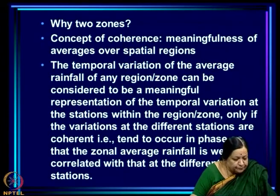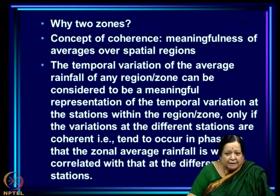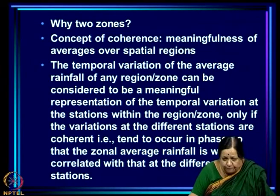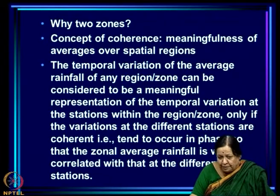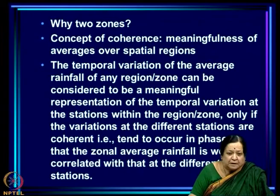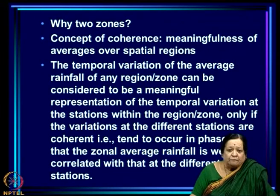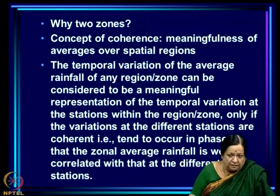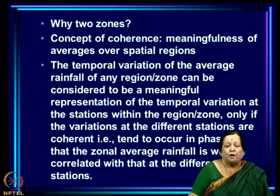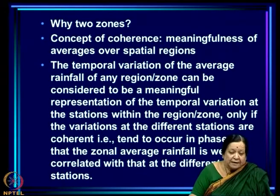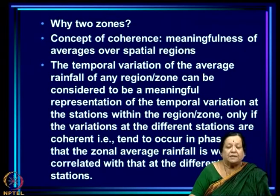To give a simple example: if half the fluid is boiling and the other half is resting over ice and we take the average temperature, that average of 50 degrees is not meaningful because part of the fluid is actually boiling and the other part is very cold. Similarly, if we have a region over which some stations have above-normal rainfall and others have a large deficit, the average may or may not be above or below normal depending on the distribution, but it will not be a meaningful representation of all the stations. This is why it is important to look at regions over which variations of rainfall are coherent.